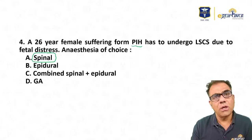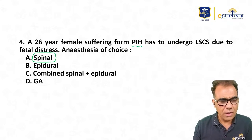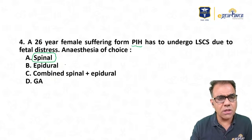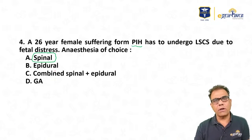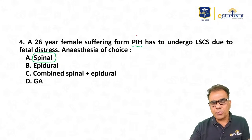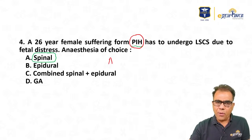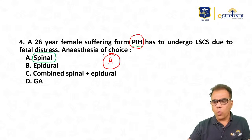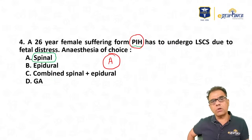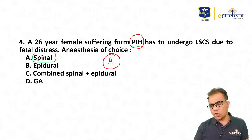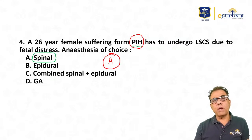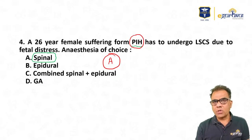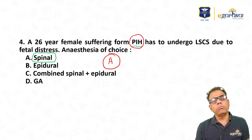This question has already been asked last year but can be re-asked, as recent advancements are often asked in AIIMS and then repeated in NEET or NEXT. So for PIH patients now — anesthesia of choice is also spinal. Previously they said epidural theoretically, but now even theoretically they say for PIH patients anesthesia of choice is spinal.